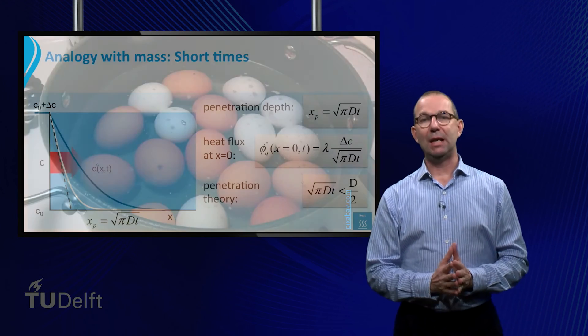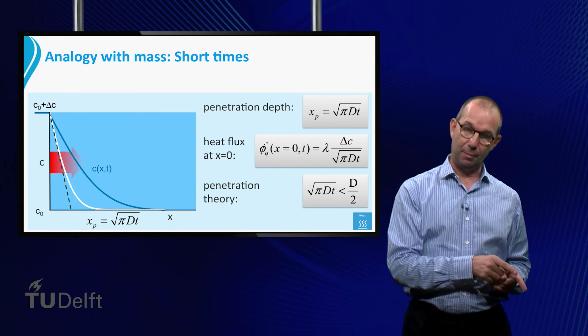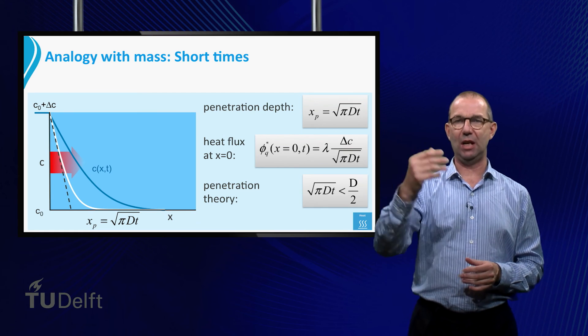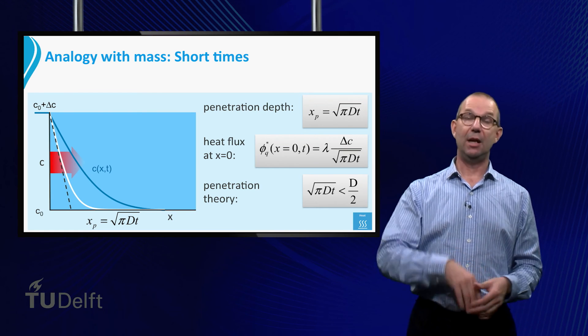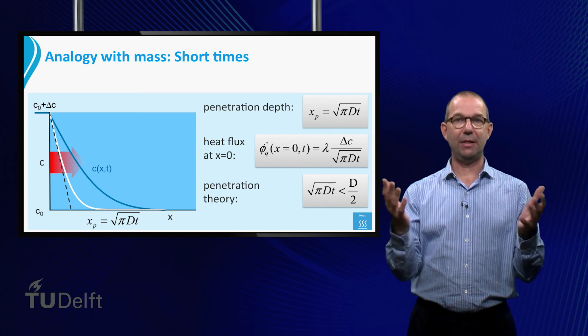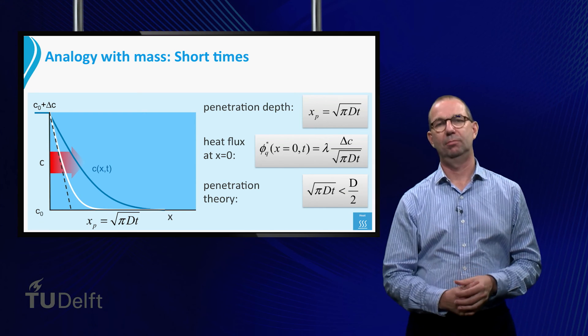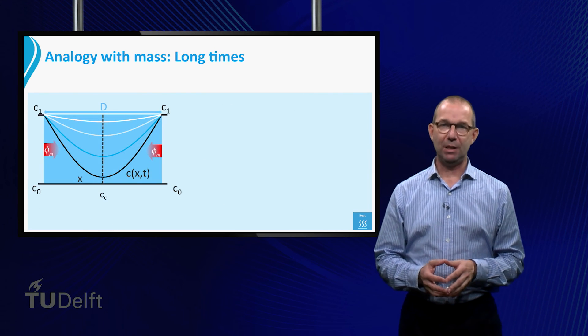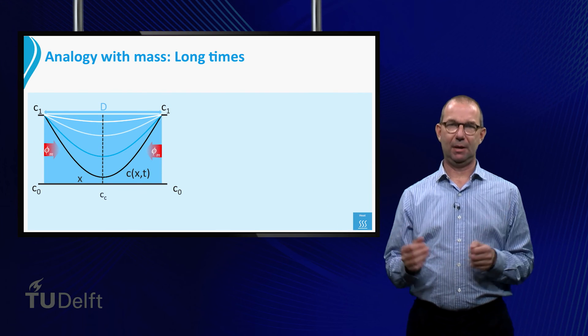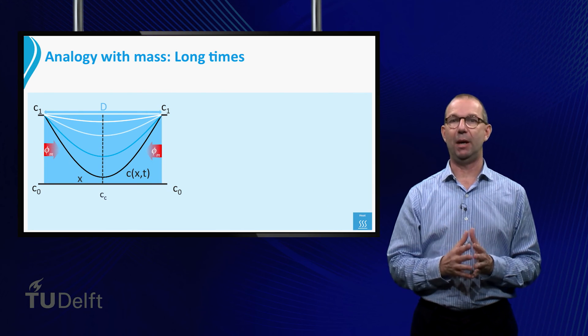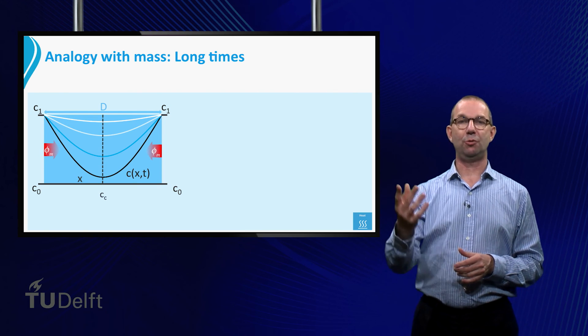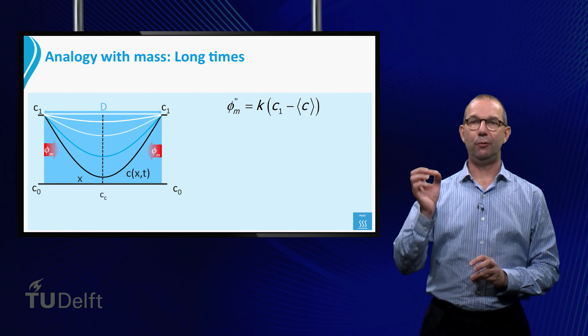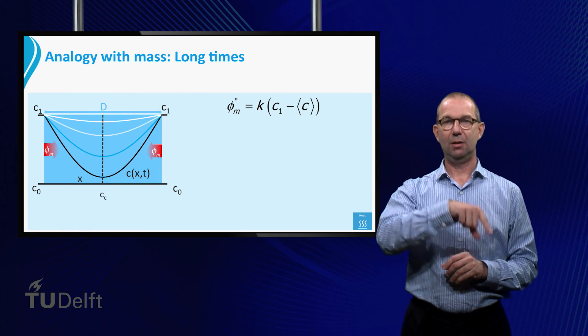Do you remember the analogy of mass transfer with heat for short times? Pretty much everything stayed the same. All we had to do is change A for D and delta T for delta C. Other than that, all ideas were the same. Well guess what? For long times that is also the case. The picture of the heat penetrating and the object getting warmer is just replaced by a completely similar one. But now with concentration and diffusion of mass.